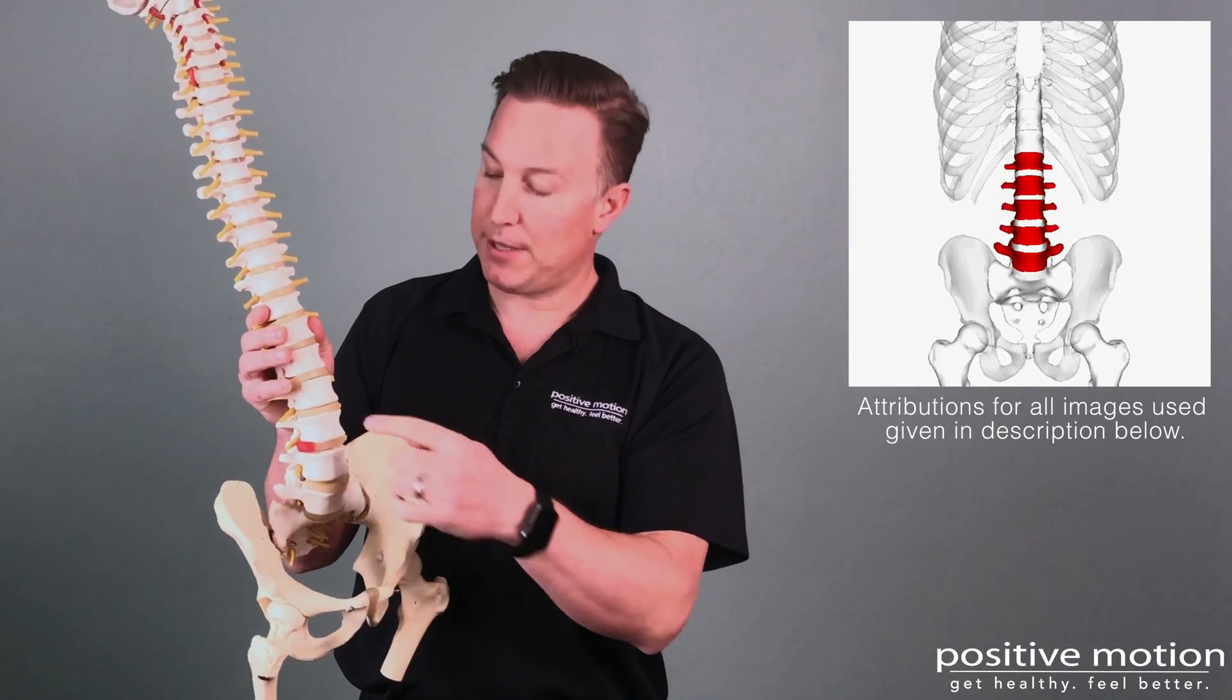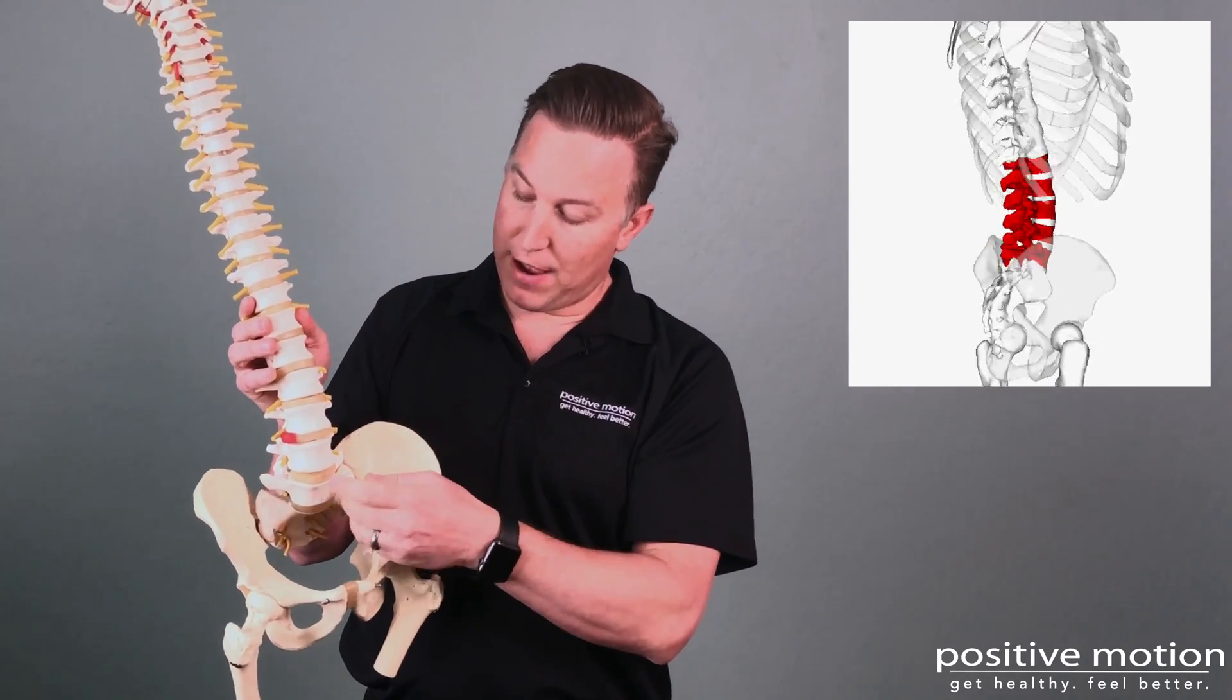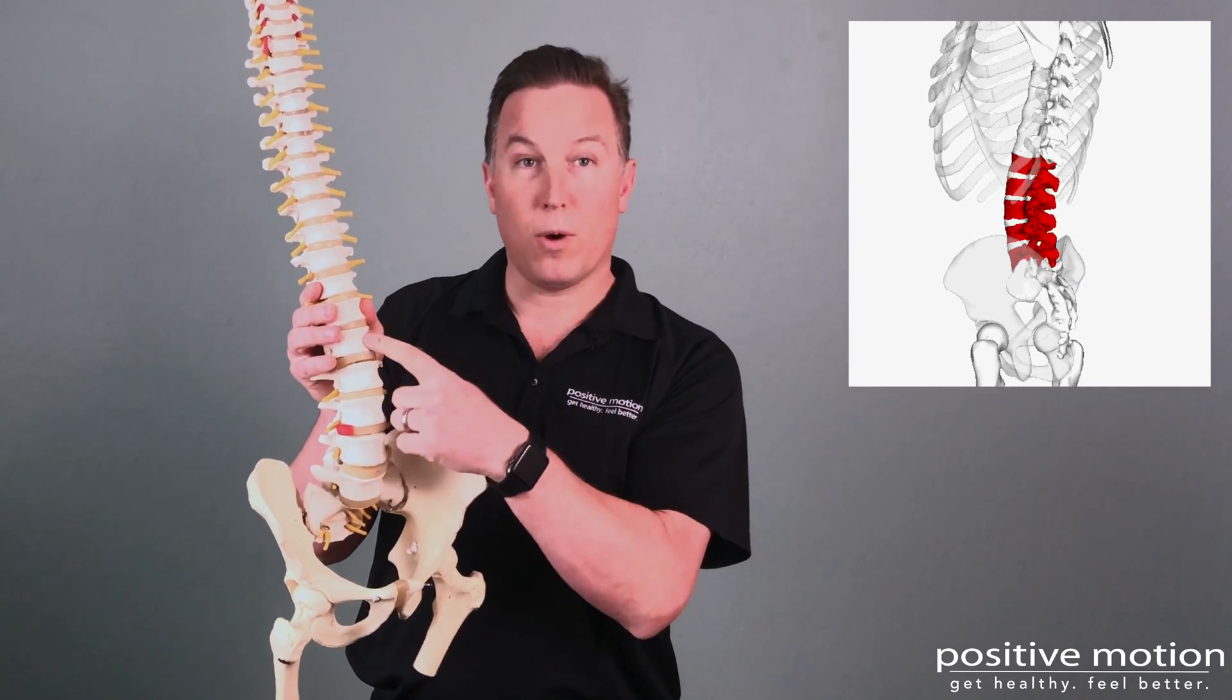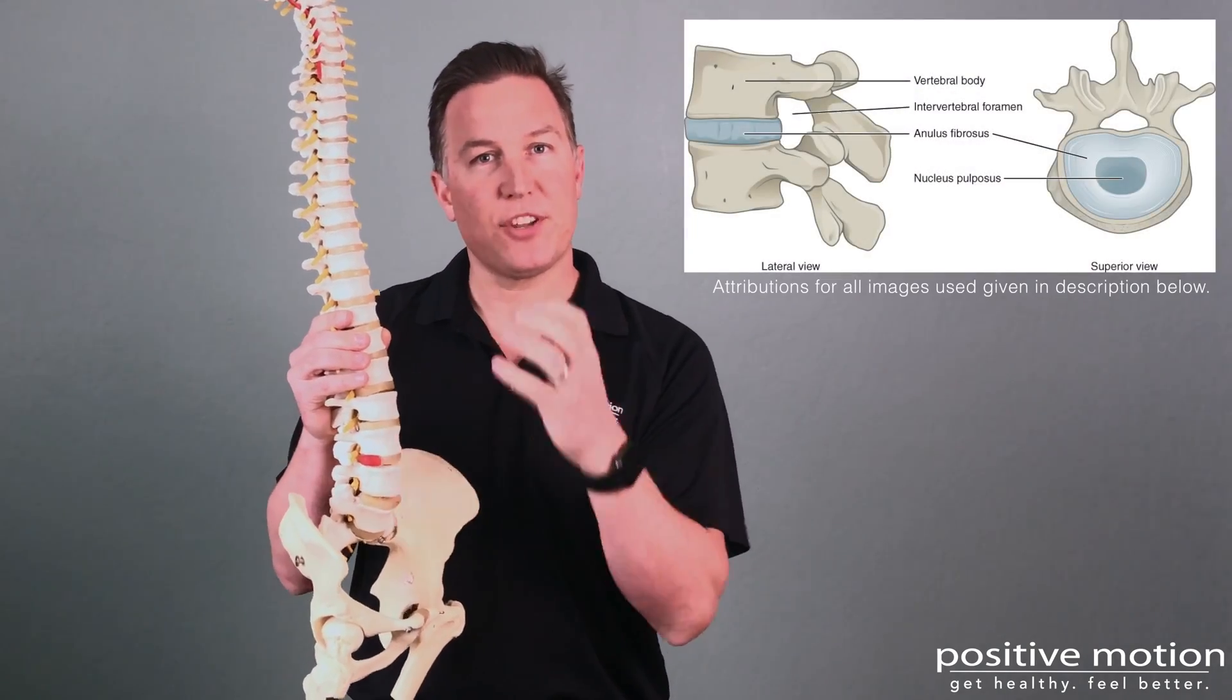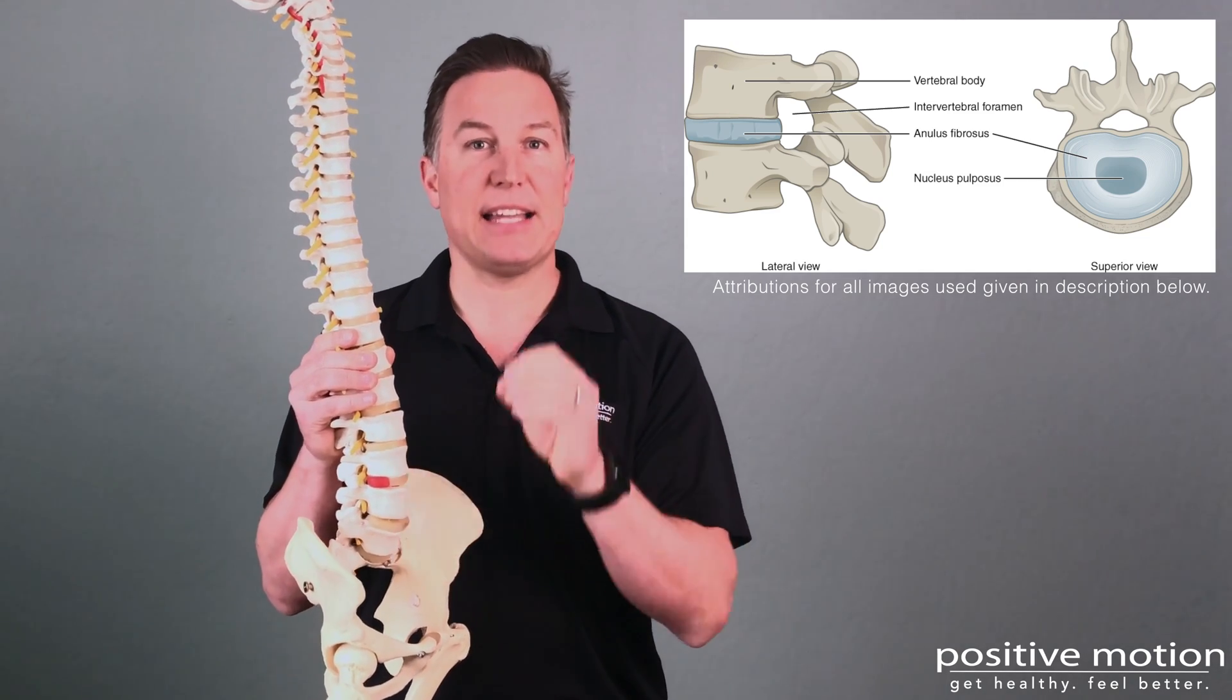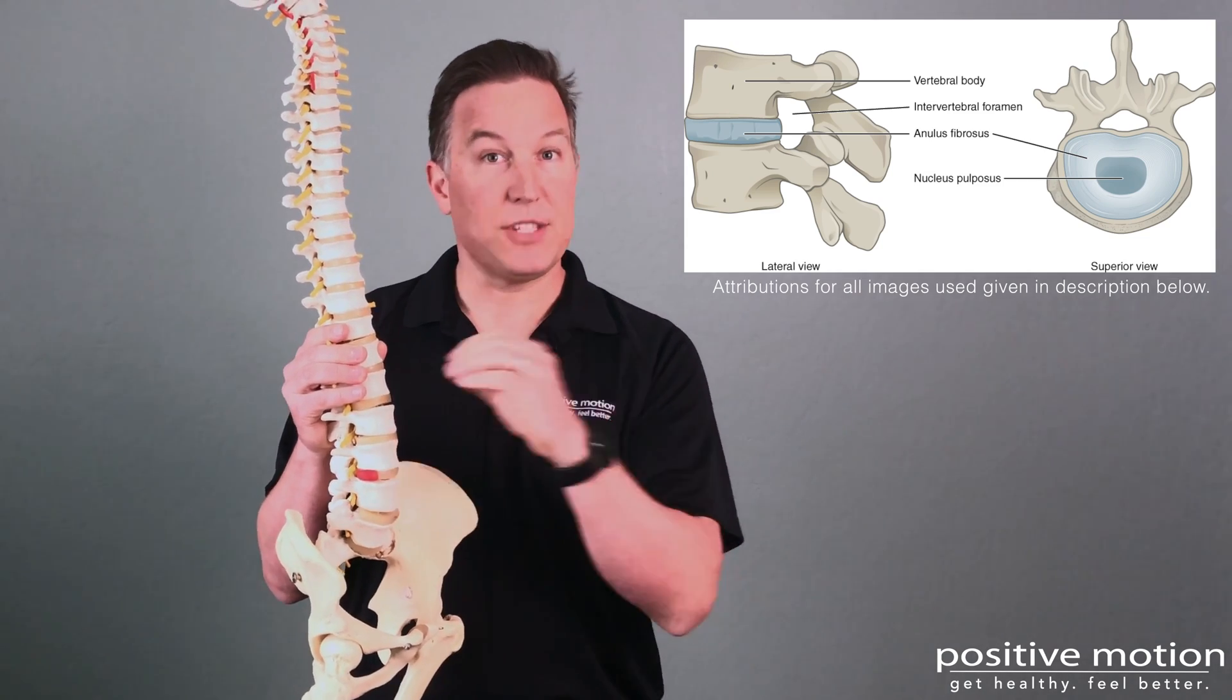And they're numbered from the top to the bottom. So L5, 4, 3, 2, and 1. Here we'd hit thoracic 12. These are your vertebral bodies. And in between those, your discs are kind of a cartilaginous substance on the outside. And on the inside, it's almost like a jelly that's mobile.